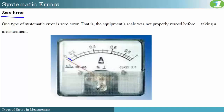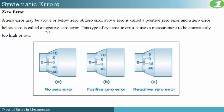There are actually two types of zero errors: positive zero error and negative zero error. A zero error may be above or below zero. If the zero error is above zero, it is called a positive zero error. If the zero error is below zero, it is called a negative zero error. That is represented here on our diagram, which shows the scale of a micrometer screw gauge.